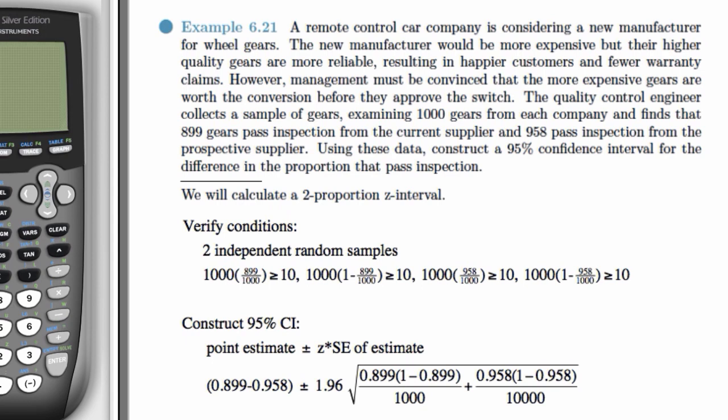We have to assume that this constitutes two independent random samples. And then we check our N1 times P1 is greater than or equal to 10, N1 times 1 minus P1 greater than or equal to 10, N2 times P2, and N2 times 1 minus P2 greater than or equal to 10. And those clearly pass.